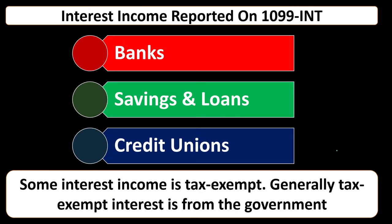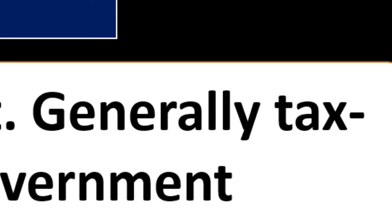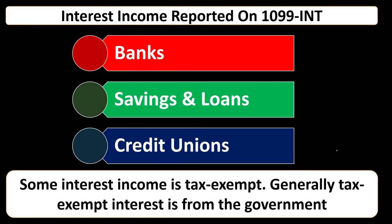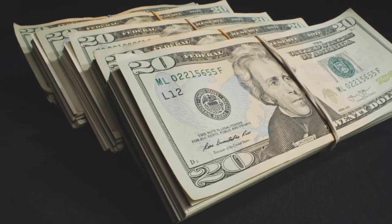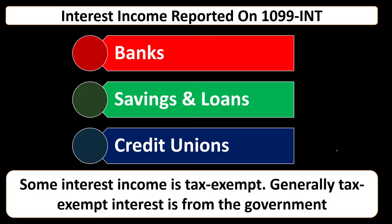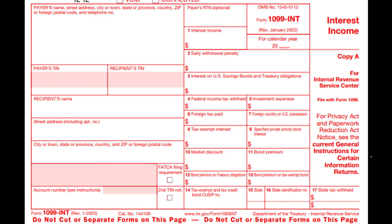Usually it's a fairly straightforward situation where you'll have the 1099, although there can be more complex situations with tax-exempt interest. Generally speaking, some interest income is tax exempt — typically tax-exempt income comes from the government. If you invest in the government, one incentive they offer is making it a tax-free or exempt situation. The general rule is all income is taxable unless there's an exception, and this is one such exception.